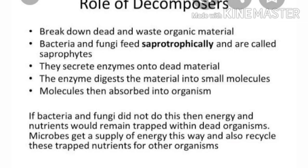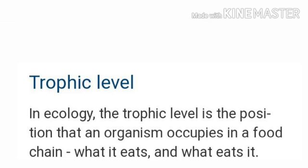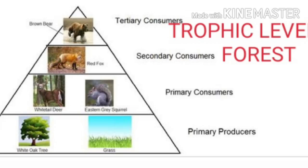Each step of a food chain is called a trophic level. The various links or steps representing organisms in a food chain at which the transfer of food or energy takes place constitute a trophic level.